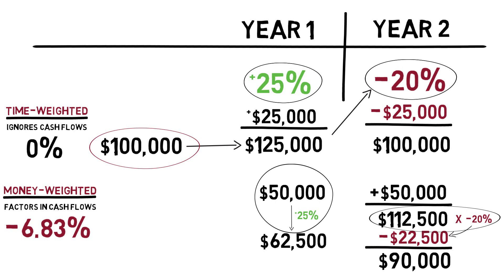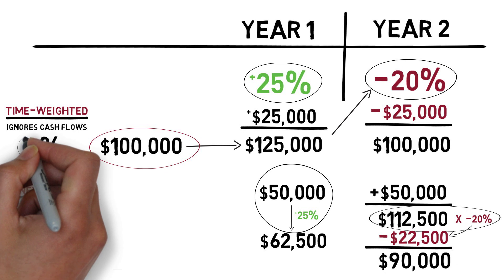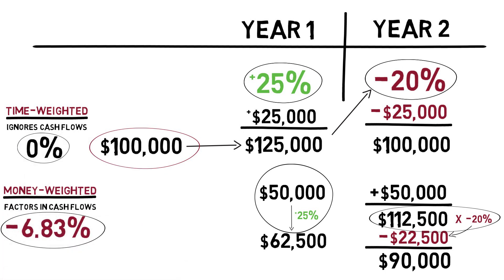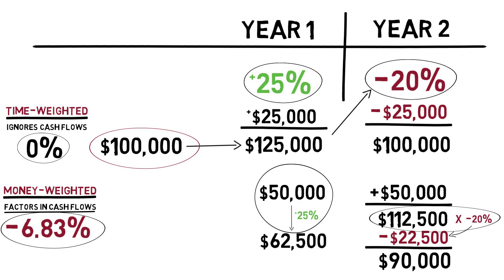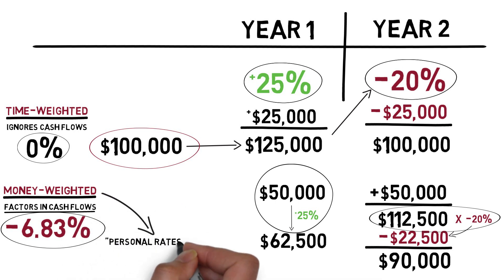As you can see, even when using the exact same fund performance, you can end up with two very different rate of return calculations. If there were no cash flows during the period, then these two rates would actually be identical. But as soon as you take into account the timing of your contributions or withdrawals, they will start to differ. That's why money-weighted returns are sometimes considered to be personal rates of return.